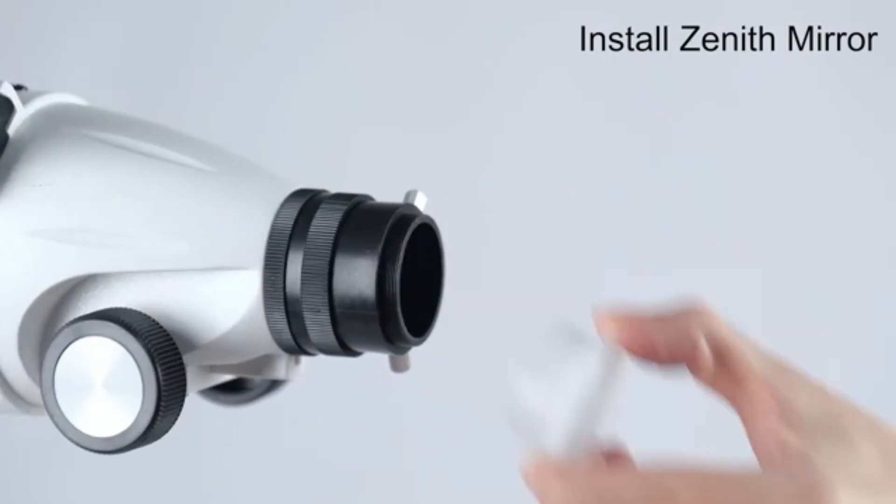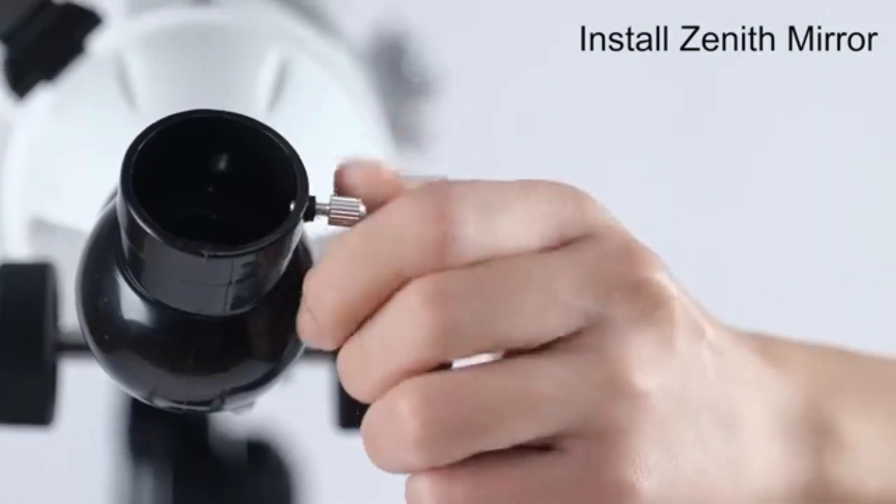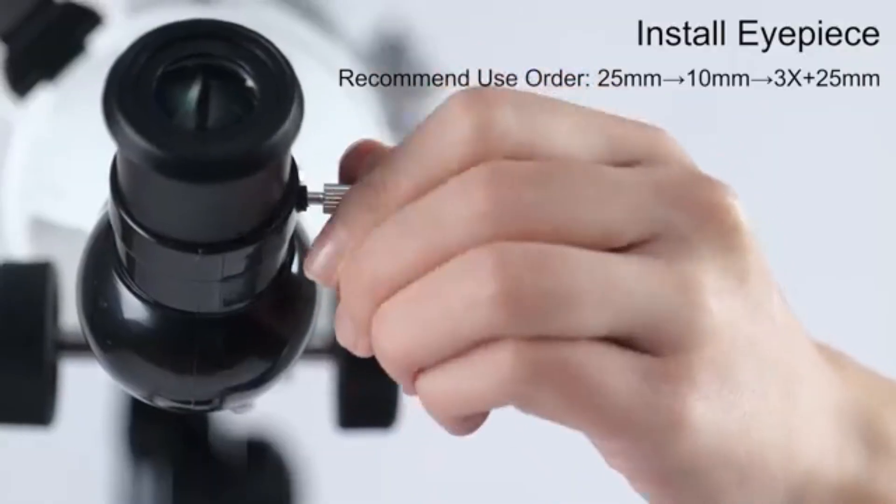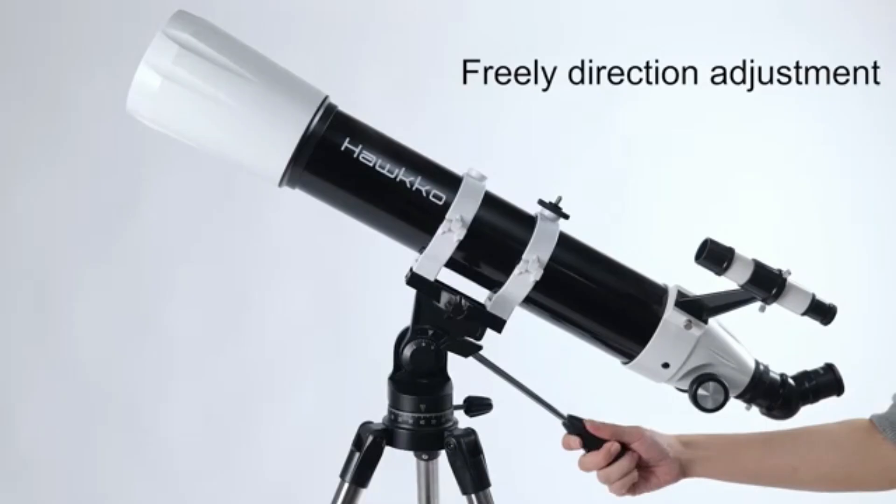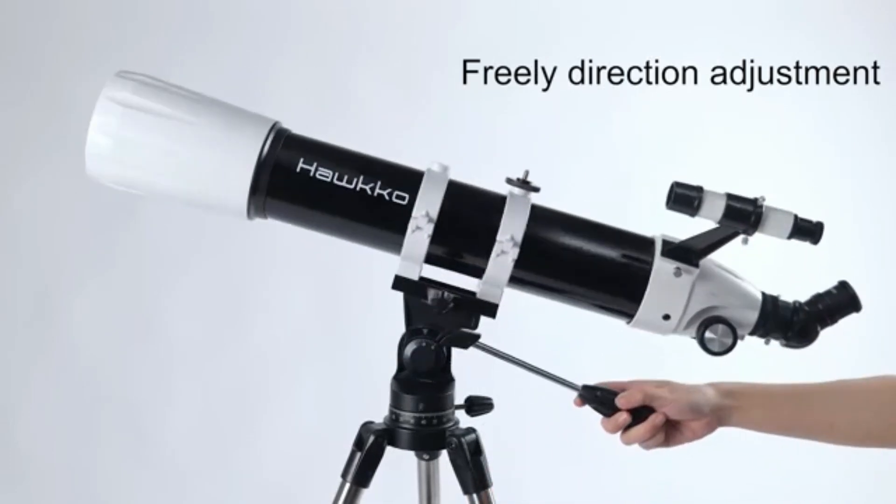Outstanding Optical Performance, this Astronomical Telescope features a large 90mm aperture and fully multi-coated glass lens, ensuring high-light transmission in clear, high-contrast images. Enhances the enjoyment of celestial and moon observations.